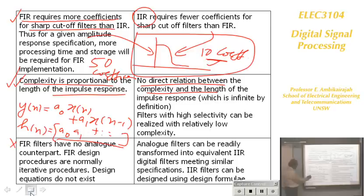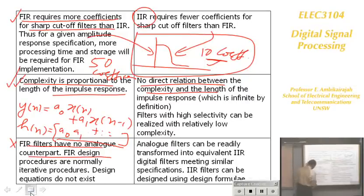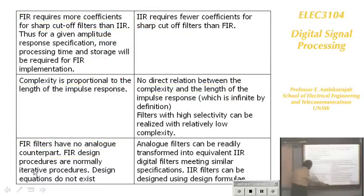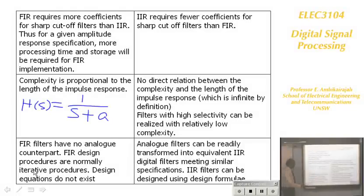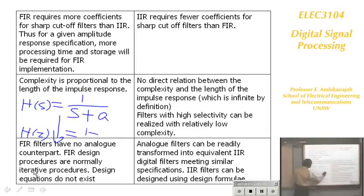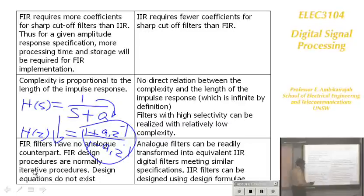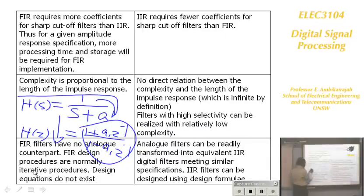FIR filters have no analog counterpart — you cannot design an analog filter and then convert it to an FIR. If you start with an analog filter like 1 over (S plus A) and use a transformation, you get a digital IIR filter like (1 plus A1·Z⁻¹) over (1 minus A1·Z⁻¹). An analog filter always gives you an IIR filter, not an FIR filter. So only for IIR filter design do you start with an analog filter; FIR is a different technique.